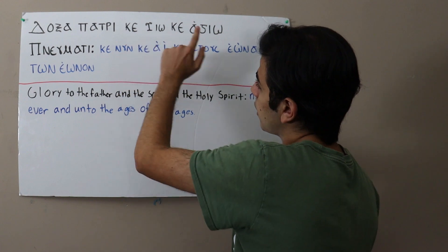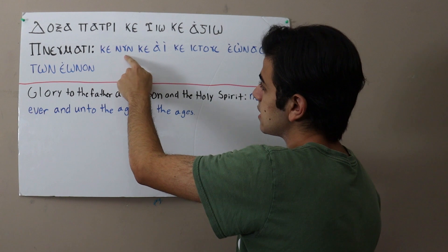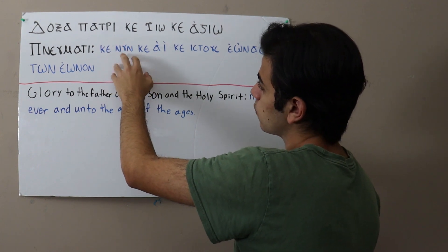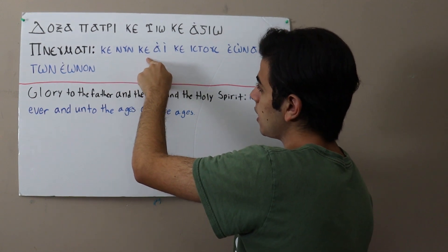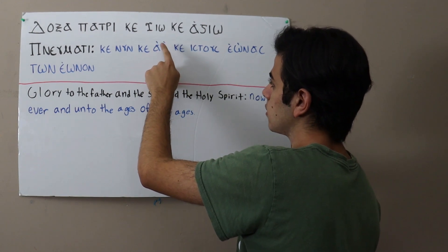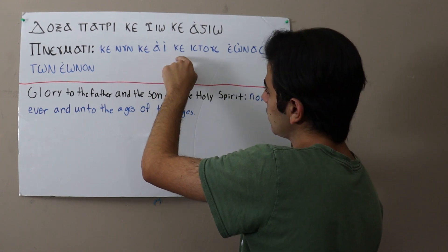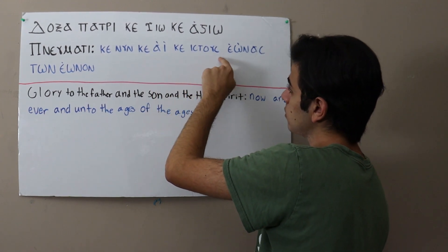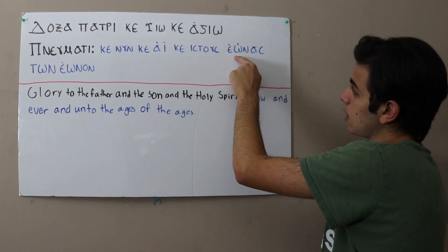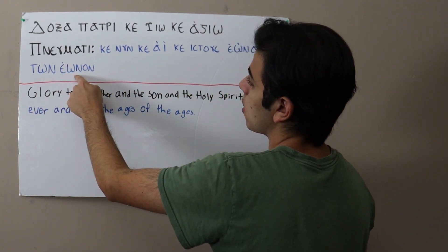So this first word we already saw it twice — it's ke. This is neen; this epsilon here makes sort of a double-e slash y sound. Then we have ke, a, e — notice this a and i looking letter, they're pronounced separately: a, e. Ke, istos — remember the o and the epsilon make a double-o sound. E, o, nas, ton, e, o, non.